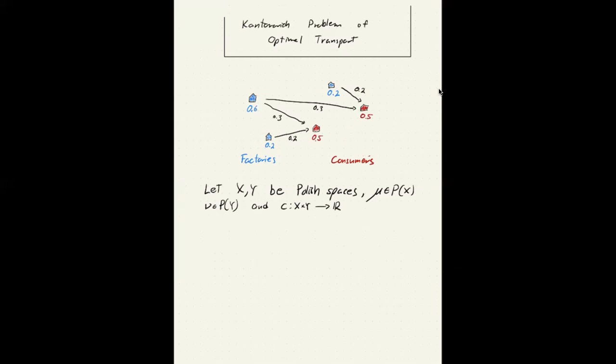And then the set of transport plans. So Π is the set that depends on μ and ν, of course. And it's the set of measures, probability measures on the product.